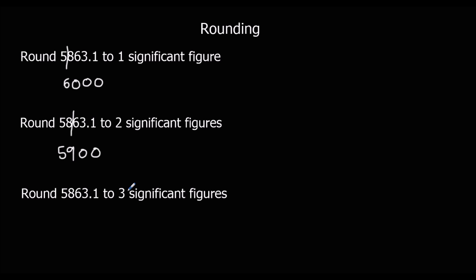And three significant figures: 1, 2, 3. The next number is a 3, so it's not going to push this up to a 7. It will stay: 5, 8, 6. And of course that's 60, that's 800, that's 5,000 — they stay, they keep that value.